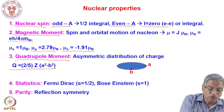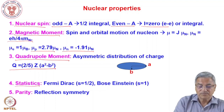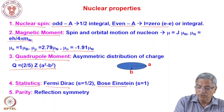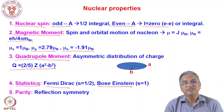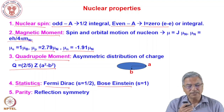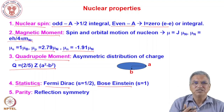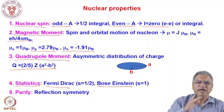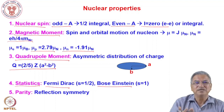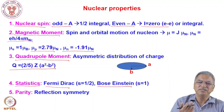Nuclei also follow certain statistics: for half-integral spin nuclei you have Fermi-Dirac statistics, and for integral spin you have Bose-Einstein statistics. Nuclei also have parity, which is reflection symmetry. If you change the wave function from x to minus x and the wave function changes sign, it is odd parity; if it does not change sign, it is even parity. We will discuss parity further when we discuss the spin states of nuclei.